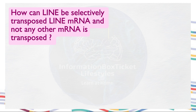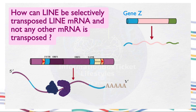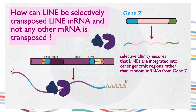It's an intriguing question: why does selective transposition of LINE mRNAs occur over other mRNAs from a gene, despite their similar structures? Studies have shown that the ORF2 products — namely the endonuclease and reverse transcriptase enzymes — have a higher affinity towards LINE mRNA in a sequence-dependent manner. This selective affinity ensures that LINEs are integrated into other genomic regions, rather than random mRNAs.